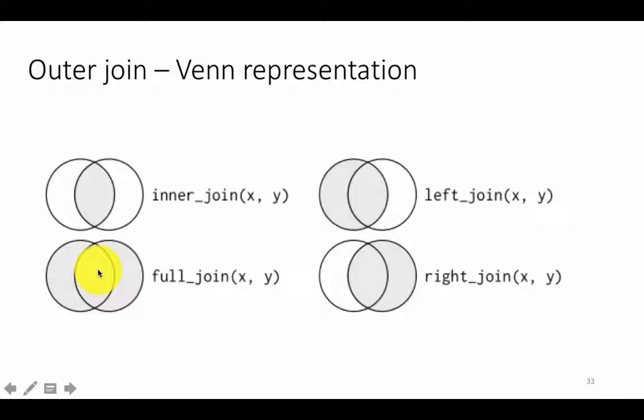For the matches, you will have columns coming from both x and y. For the mismatches, you will have only columns coming from either x or y, with the other ones being NA or missing values.